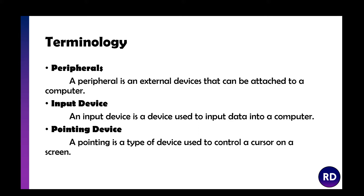Some terminology first: a peripheral is an external device attached to the computer, such as your monitor, keyboard, or mouse — anything on the outside that you can touch. An input device is a device used to input data into the computer. An output device is a device that allows you to receive information from the computer. A pointing device is a type of device used to control a cursor on the screen.